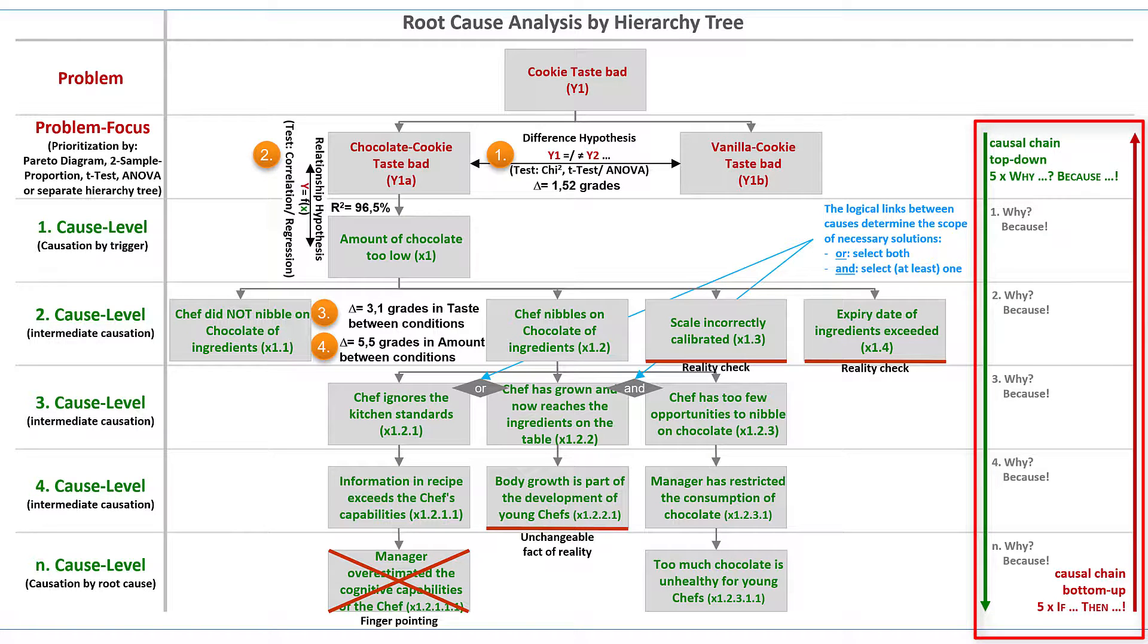To test the plausibility of our causal chain, we now go back the way from bottom to top with a sequence of if-then conclusions. It's a reversal of the why-because procedure. So I ask, if too much chocolate is unhealthy, is it then plausible that the manager forbids the Chef to eat too much chocolate? If the experts find the conclusion plausible, then I continue: If the manager forbids the Chef to eat too much chocolate, does the Chef then have too few opportunities to nibble chocolate? And finally, if the Chef has too few opportunities to nibble chocolate, is it plausible that the Chef then nibbles chocolate from the ingredients? We can continue this review of our analysis up to the problem and repeat it for each branch of the hierarchy tree. This check can help to identify gaps in the chain of causes.